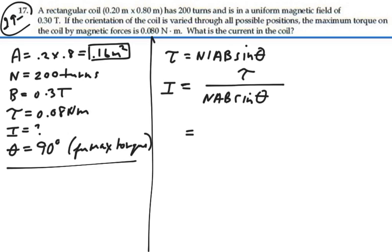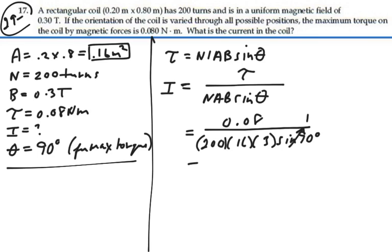And that's going to be equal to 0.08 over the number of turns, 200, times the area, 0.16, times the field, 0.3, times the sine of 90 degrees, which is indeed 1, and this is equal to 8.33 times 10 to the minus 3 amps.